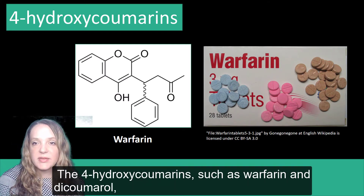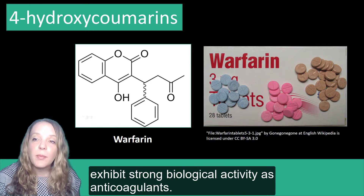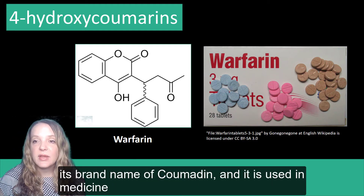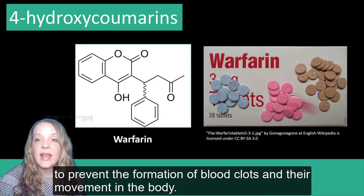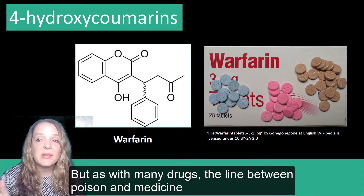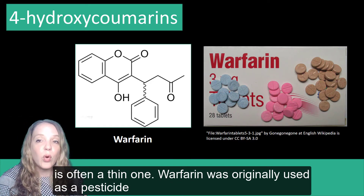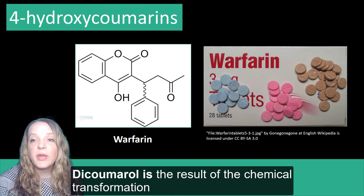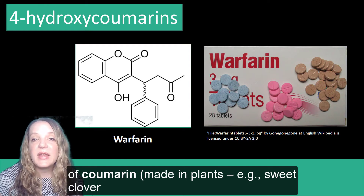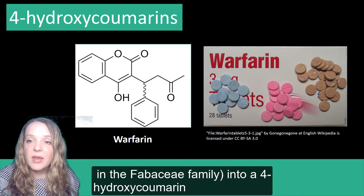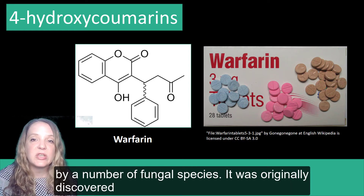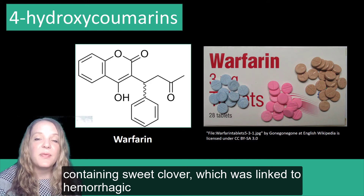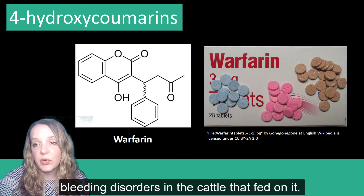The 4-hydroxycoumarins, such as warfarin and dicoumarol, exhibit strong biological activities as anticoagulants. Warfarin is also known by its brand name Coumadin, and it is used in medicine to prevent the formation of blood clots and their movement in the body. But as with many drugs, the line between poison and medicine is often a thin one. Warfarin was originally used as a pesticide against rodents and is still used for this purpose. Dicoumarol is the result of the chemical transformation of coumarin, made in plants like sweet clover in the Fabaceae family, into a 4-hydroxycoumarin by a number of fungal species. It was originally discovered following the examination of silage — moldy or fermented hay — that contained sweet clover, which was linked to hemorrhagic bleeding disorders in the cattle that fed on it.